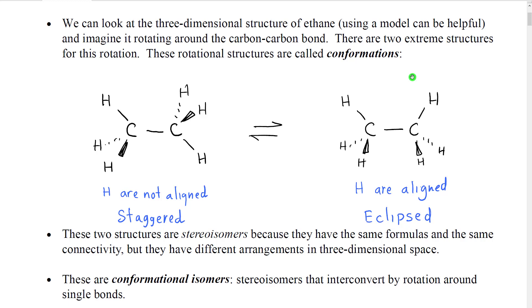However, there are two limiting structures — sort of maximally different or maximally similar structures — and since we can definitely define these structures, we call these two structures conformations. The two structures that we're talking about are drawn here using dashes and wedges in a three-dimensional drawing. The first structure has the hydrogens completely unaligned on the front carbon and the back carbon. We call this structure the staggered structure.